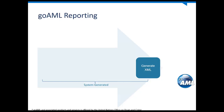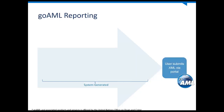Finally, we generate the XML or the reports. With most regulators including GoAML, they take reports in a particular format — for GoAML it's XML — and we export the report in that exact schema so it's not rejected by the FIU's servers. This can also be done in batches, so you don't have to select one report at a time. Benjamin will go through some of that in the demo.